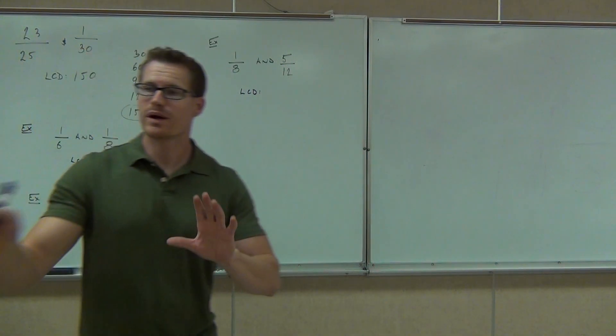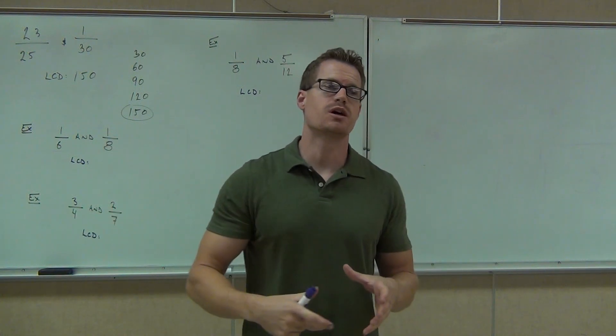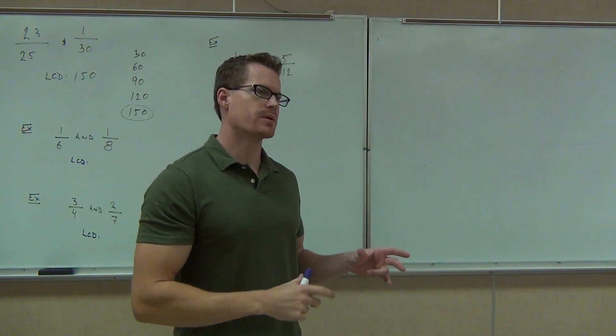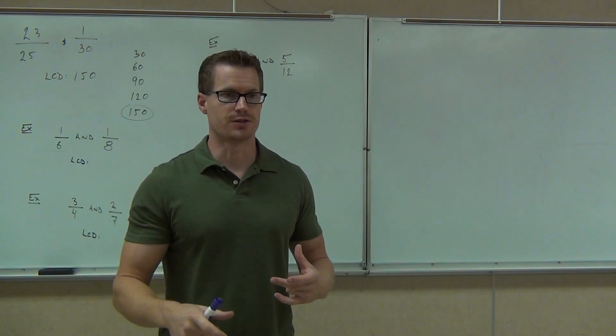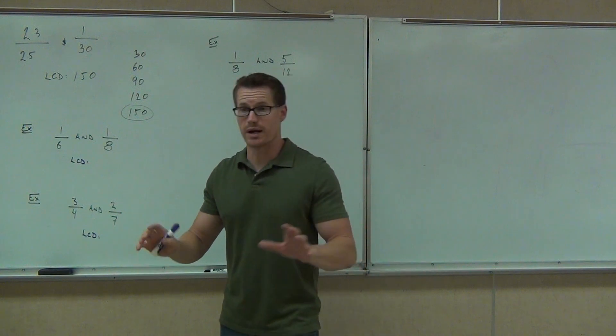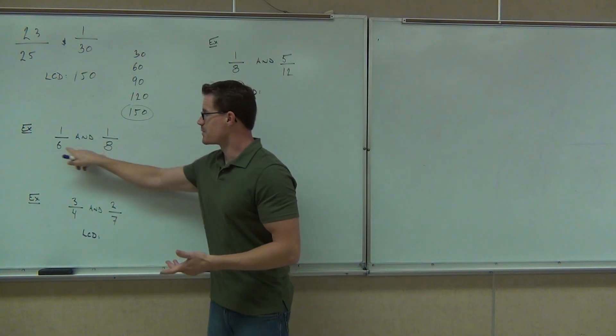So we are finding LCD, and the way that we're practicing doing this is we're trying to find the lowest or the smallest number that has both of our denominators as a factor. The quickest, easiest way to do this is to take the largest of your denominators. We're not really even worried about the numerators right now. We will be in the next section, but for right now we're just looking at these numbers, the bottom numbers.